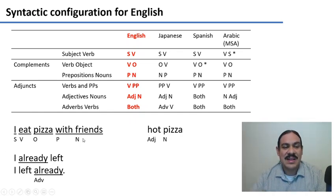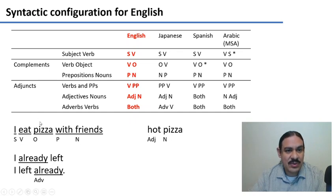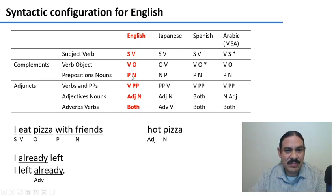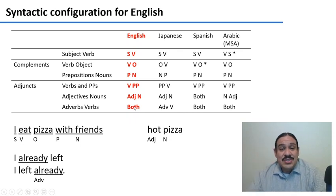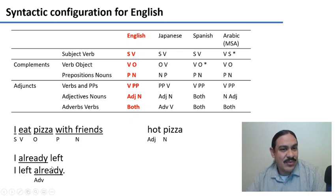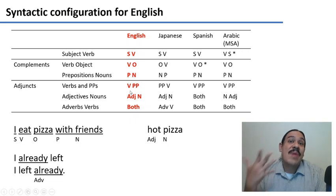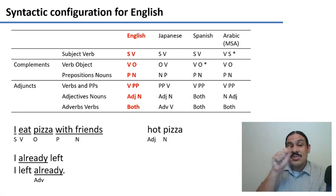Let's look at a few examples. Here we have the phrase "I eat pizza with friends." The subject goes before the verb in English. The verb "eat" goes before the direct object "pizza." And the preposition "with" goes before the noun "friends." So you can see how this sentence illustrates these three settings. It also illustrates how the verb needs to go before the prepositional phrase: "I eat with friends." In English, we have the adjective before the noun, so we have "hot pizza." But adverbs and verbs can be in either direction — you can have both "I already left" and "I left already," with the adverb either before or after the verb.